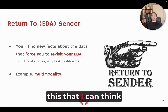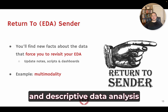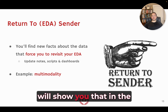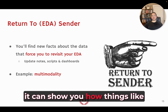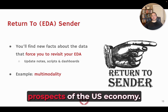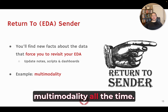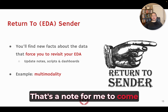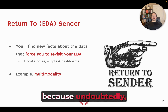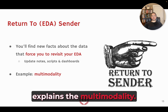The most important example is multimodality. Whenever you see multimodality in a single metric, it means there's something about that distribution that could be divided — there are two populations there. Descriptive data analysis will show you that. In the context of the Silverman survey, it can show how things like satisfaction differ by agent type or by perceptions of future U.S. economy prospects. As I start dividing those distributions by other metrics, I'll figure out how they differ, then go back and link to the DDA that explains the multimodality.